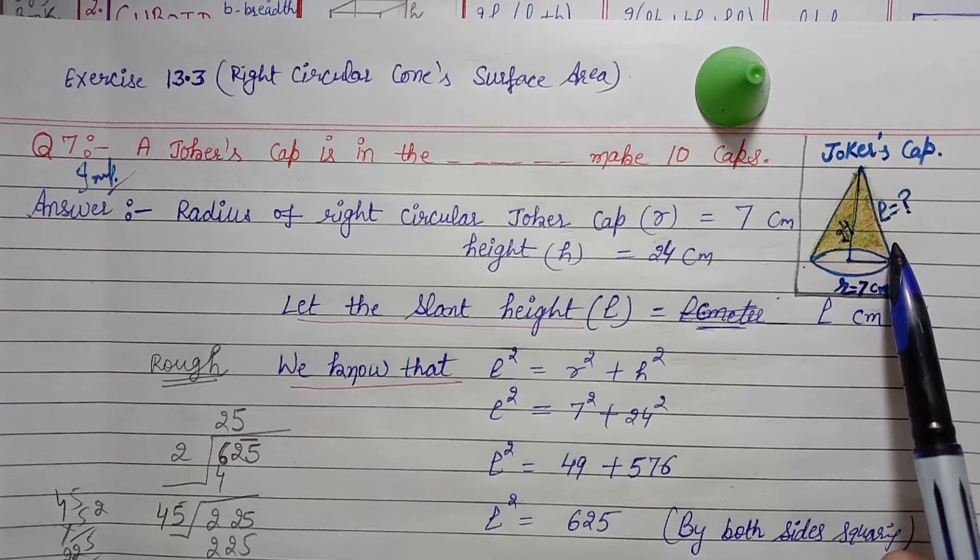Here we will find out the area of the sheet which is required to make one cap. How to find it? Using curved surface area formula. Which is πrL. Substituting values: 22/7 × 7 × 25 = 550 cm². This is the sheet required to make one cap, 550 cm² sheet.